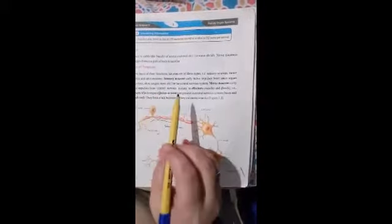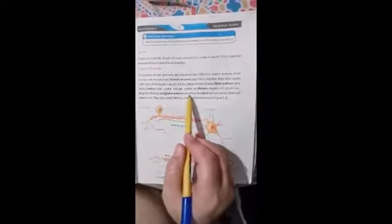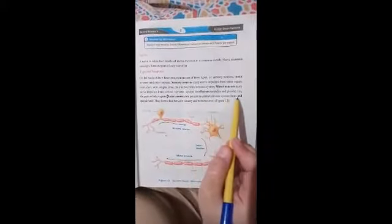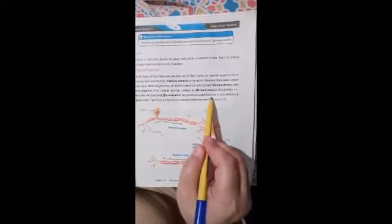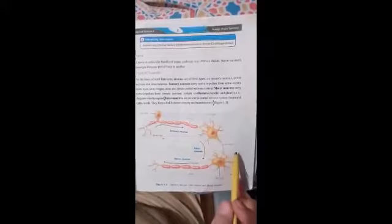And for interneurons, you have to start: interneurons are present in central nervous system, brain and spinal cord. They form a link between sensory and motor neurons. Up to this, including this diagram.